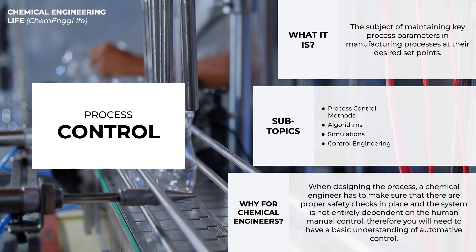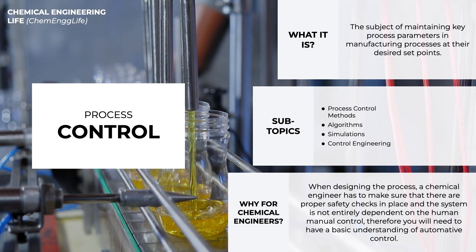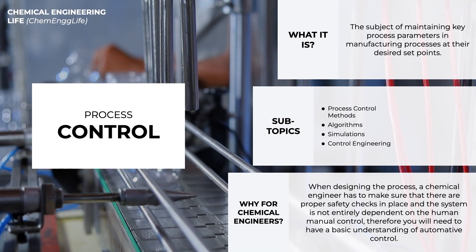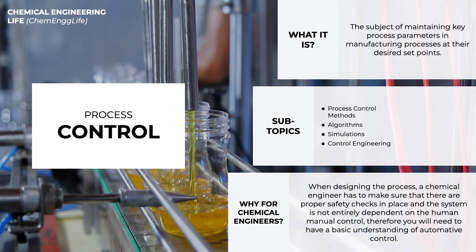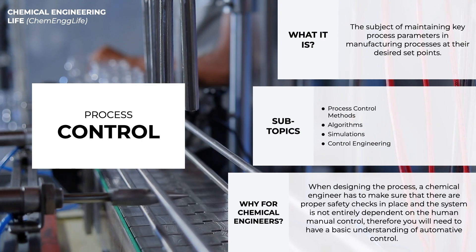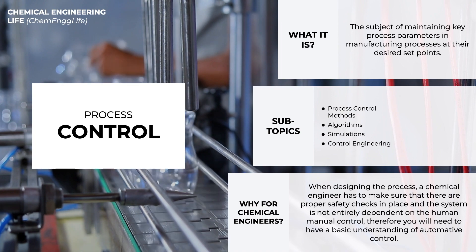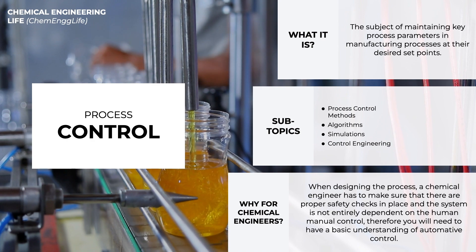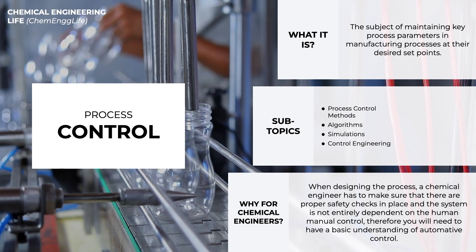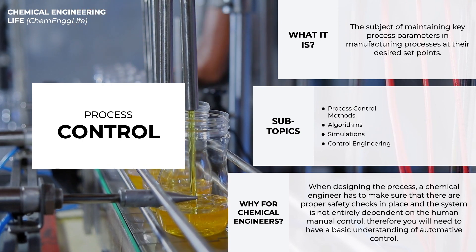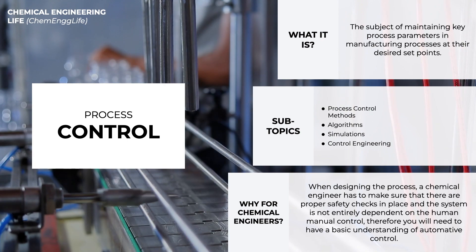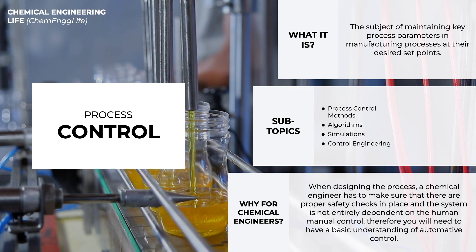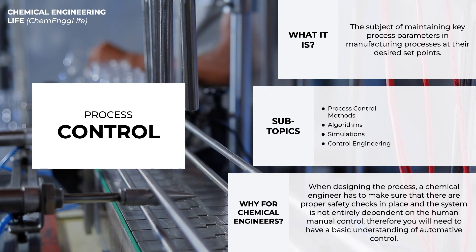Something similar can happen in a process plant. If you have a temperature-sensitive reaction and you want the temperature of a reactor to remain at 50 degrees Celsius, through process control you will be able to identify the parameters and set points, and program different control systems to identify if those set points are met or not. If there is a deviation, you can program the system to either correct it automatically or raise an alarm for manual modification. For example, if the temperature rises to 60 degrees Celsius, the system can decrease the temperature or alert the operators.